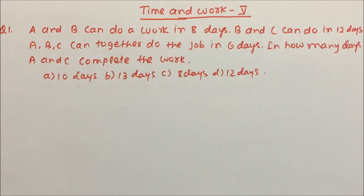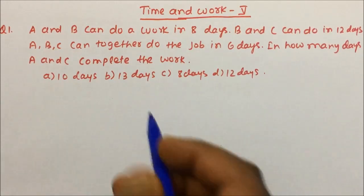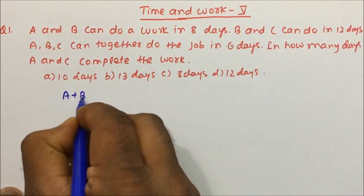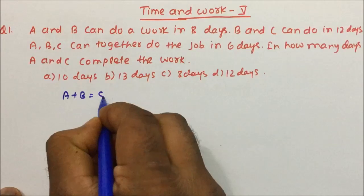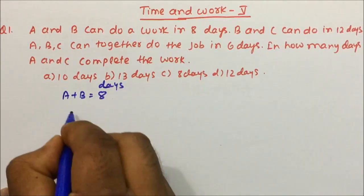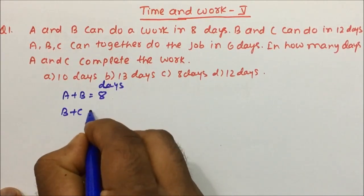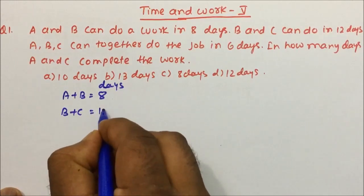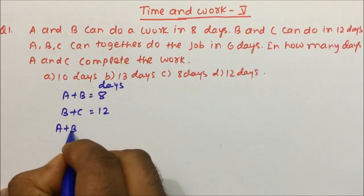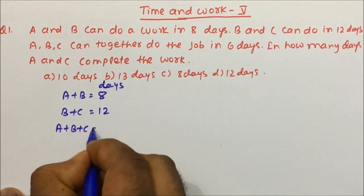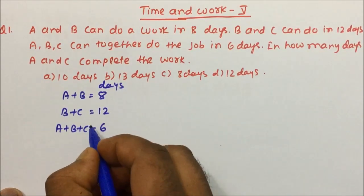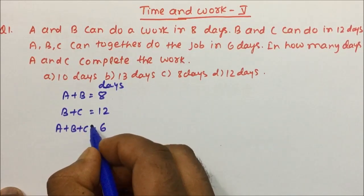The question is: A and B can do a piece of work in 8 days, B plus C can complete the work in 12 days, and A plus B plus C can complete the work in 6 days. In how many days will A and C complete the work?